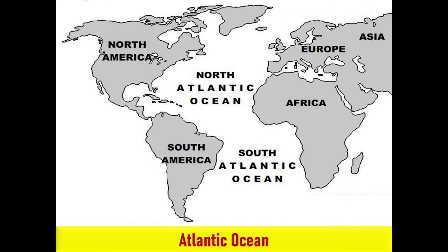The Atlantic Ocean separates the Americas from Europe and Africa. It may be further subdivided by the equator into northern and southern portions. The Atlantic Ocean is the second largest ocean in the world. The Gulf Stream is a powerful warm current that flows in the Atlantic from the tip of Florida, up the coast of the United States, and then over to Europe, having a large impact on the climate of the eastern US and western Europe. Columbus proved that the Earth was not flat by sailing across the Atlantic and discovering the Americas. The Atlantic Ocean gets its name from the Greeks, who called it the Sea of Atlas.